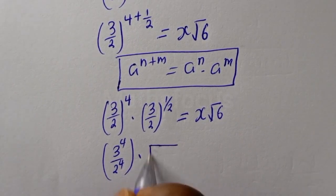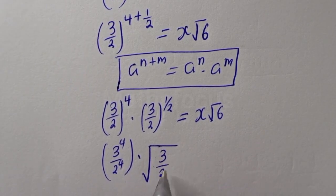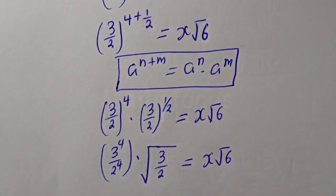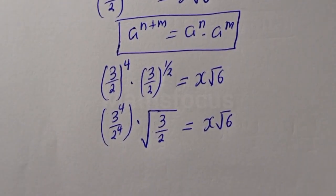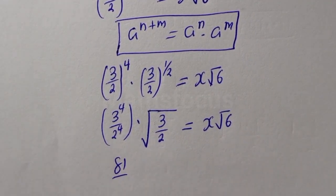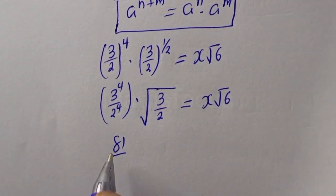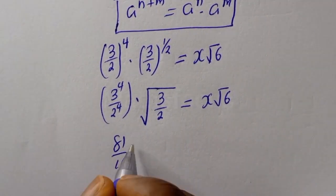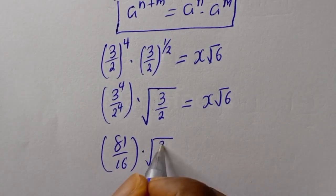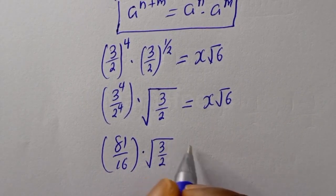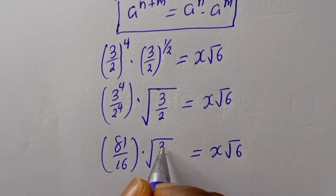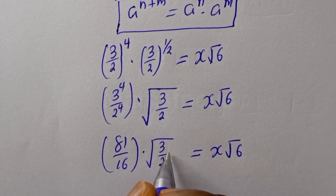Now 3 over 2 to the power of 4 is 81 over 16, multiplied by root 3 over 2, is equal to s square root of 6. Now let's multiply both the numerator and denominator by 2.